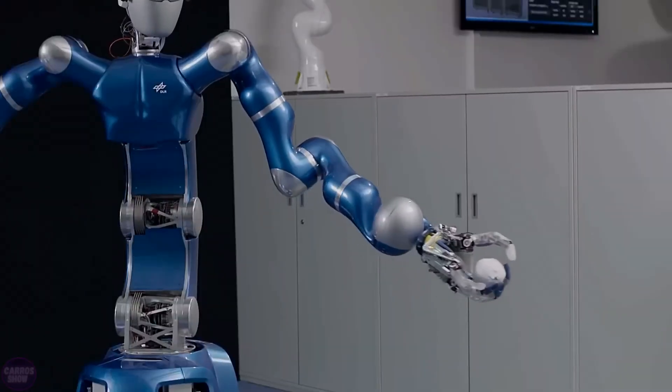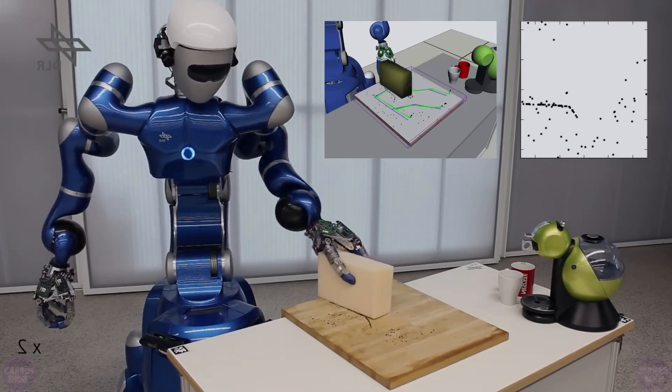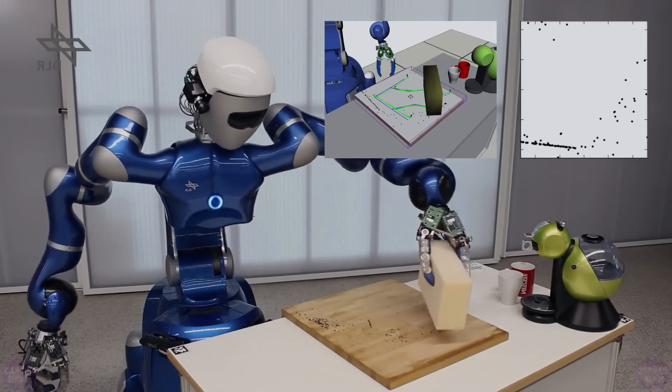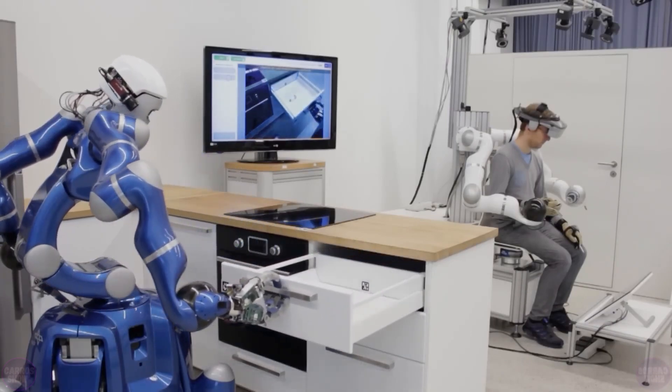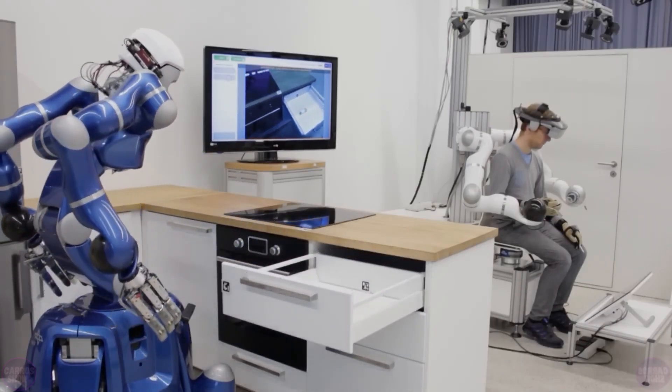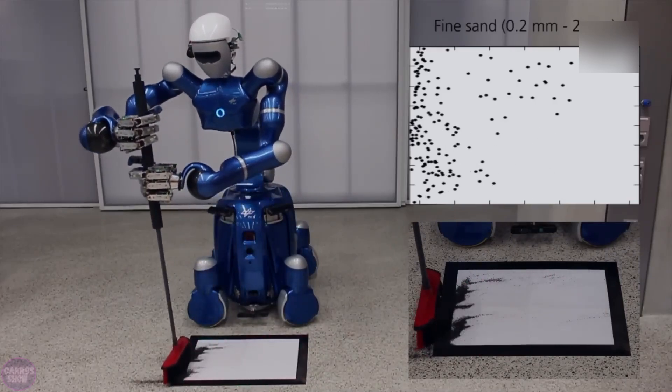The robot stands 1.9 meters tall. Roland Justin weighs around 200 kilograms and has 43 degrees of freedom distributed throughout its body, 7 degrees of freedom per arm, 12 for each hand, 5 in the torso, neck area, and on its wheeled base, enabling it to move freely in space.